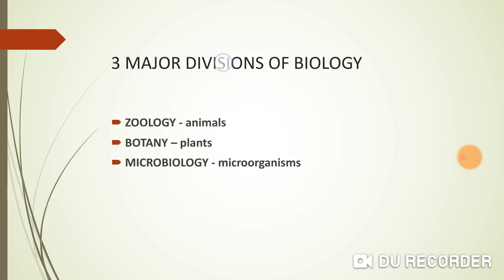There are three major divisions of biology: zoology, botany, and microbiology. Remember zoo — animals are in a zoo, so the study of animals is zoology. Boote (plants) reminds us that the study of plants is botany. And microscope reminds us that the study of micro-organisms is microbiology.